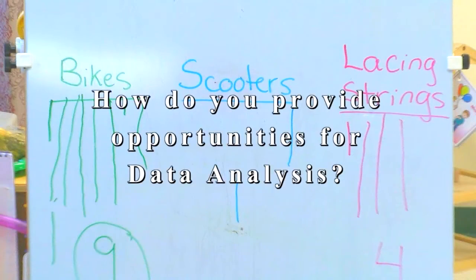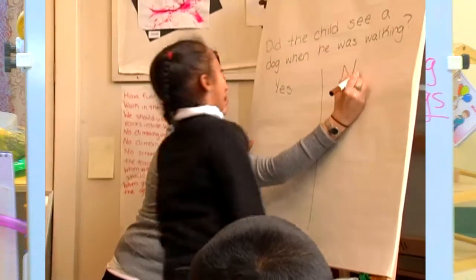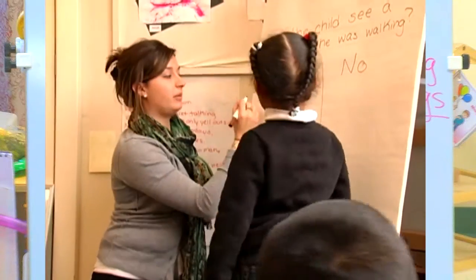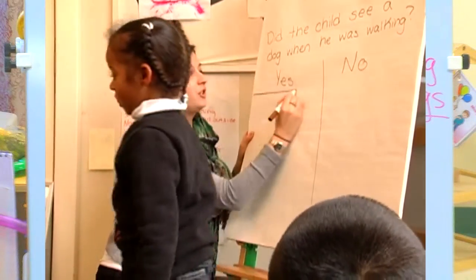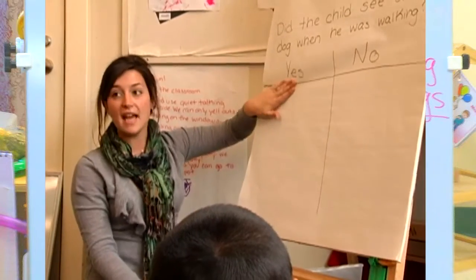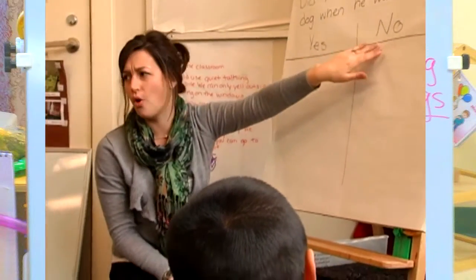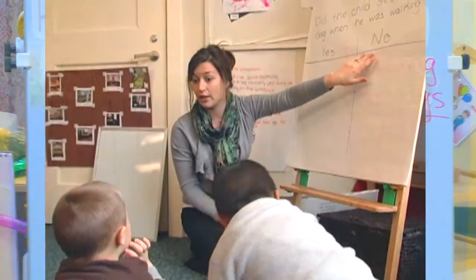Data analysis builds the bridge between these two important concepts. Adults can provide daily opportunities for children to engage in this process. Your choices are: your answer is either yes, the child did see a dog, or no, the child did not see a dog.